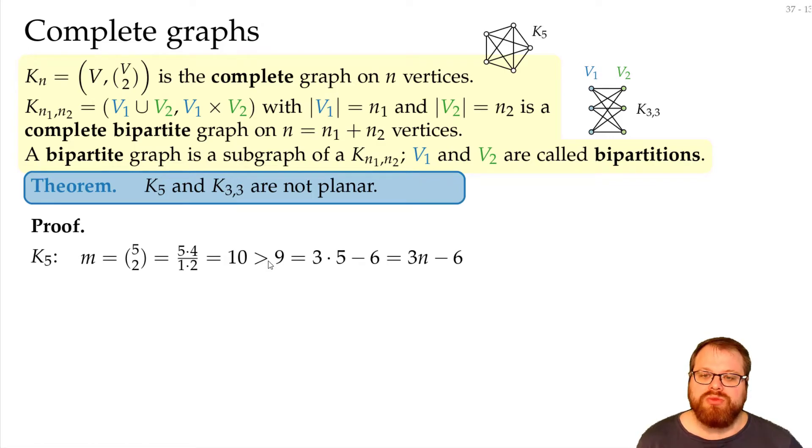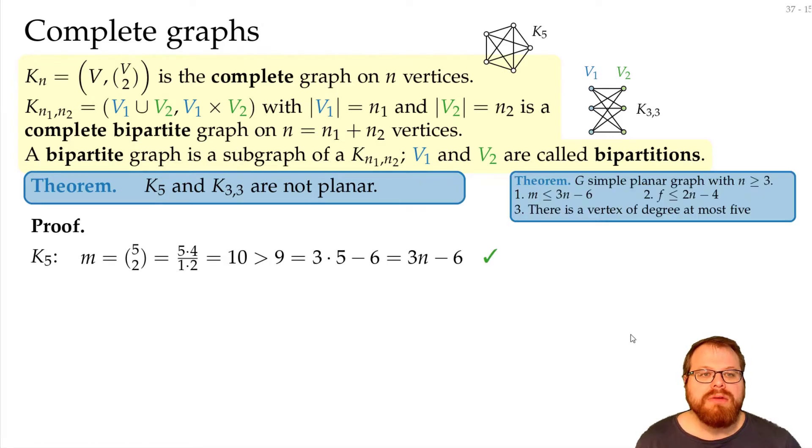But what about the k33? We do the same. How many edges do we have? We have 3 vertices here, 3 here, they are all connected to each other, so we have 3 times 3 equals 9 edges. What does the formula tell us? Well, we have at most 3n minus 6 edges. n is 6, so we have 18 minus 6, which is 12, which is larger. So by this formula it could be possible that it's a planar graph.